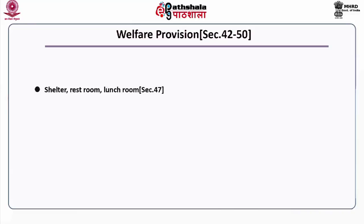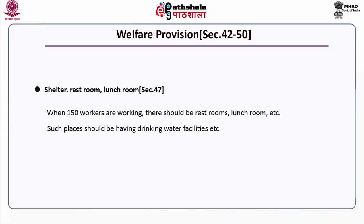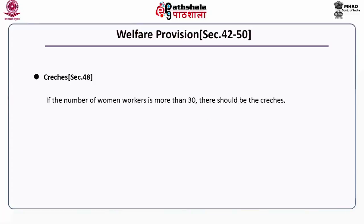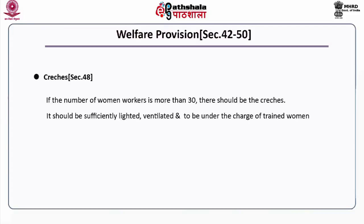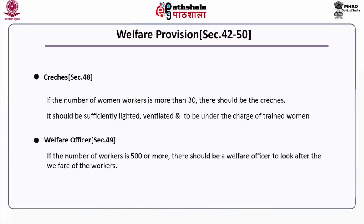Section 47, shelter, rest room and lunch room: when 150 workers are working, there should be rest rooms, lunch rooms, etc., with drinking water facilities also provided. Under Section 48, crèche: if the number of women workers is more than 30, there should be a crèche, sufficiently lighted, ventilated and under the charge of a trained woman. Welfare officer under Section 49: if the number of workers is 500 or more, there should be a welfare officer to look after the welfare of the workers.